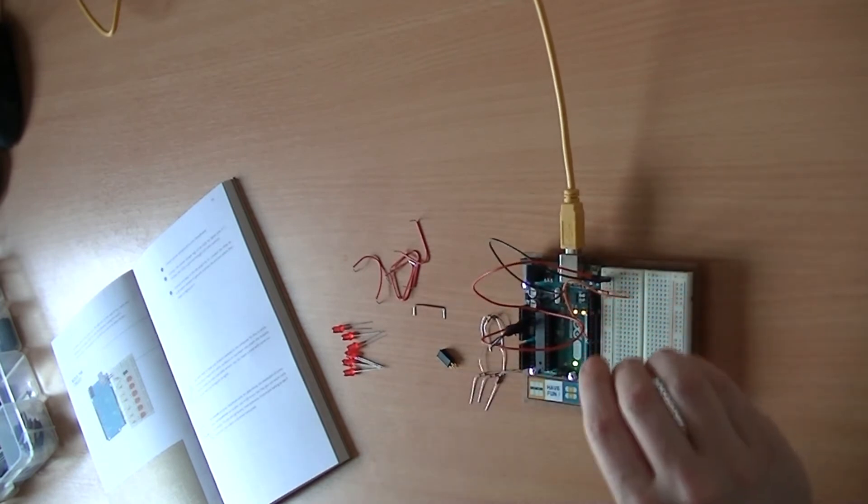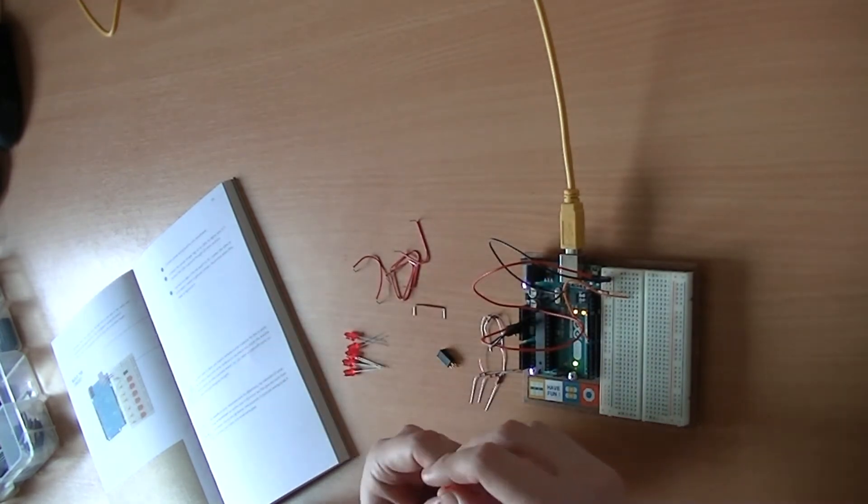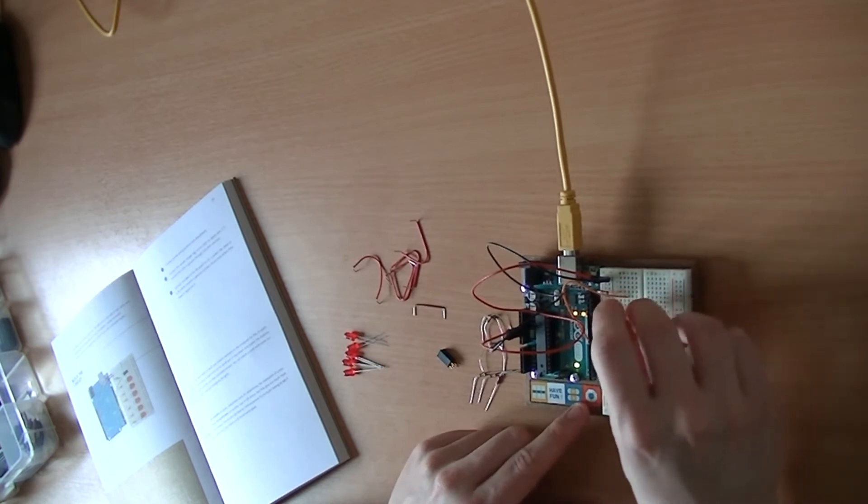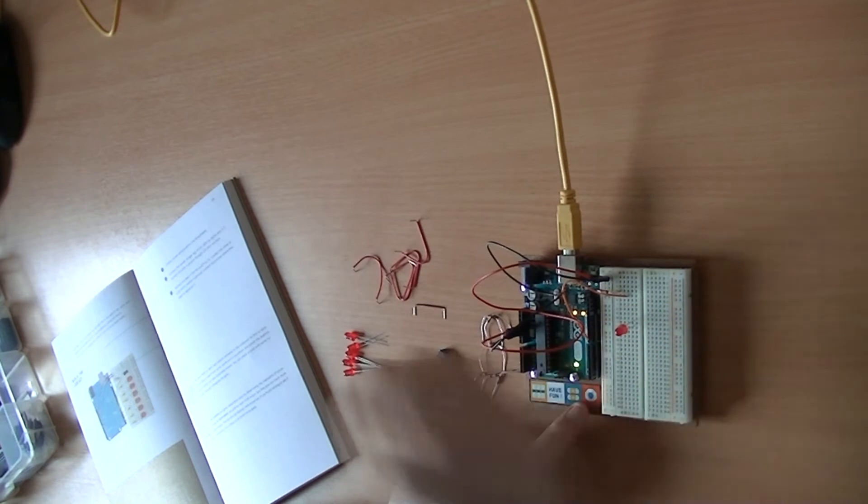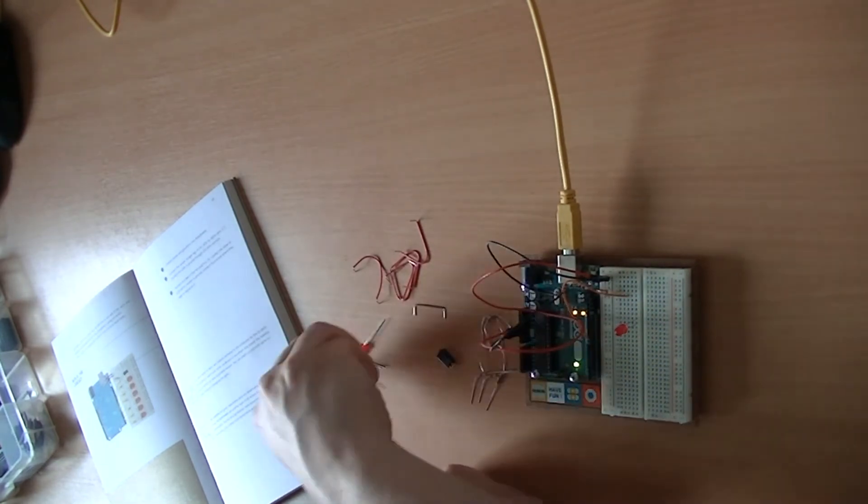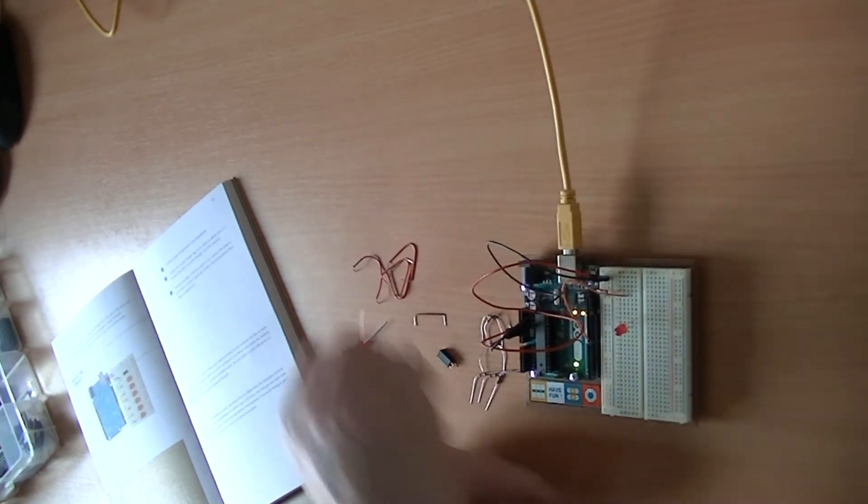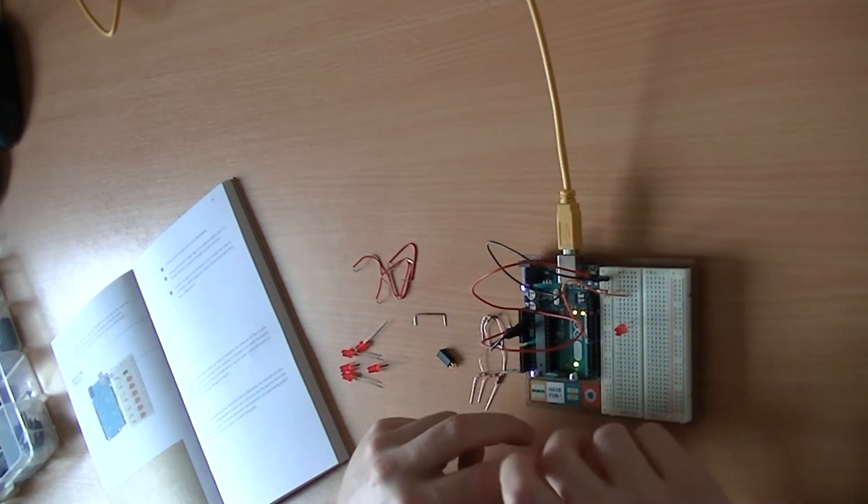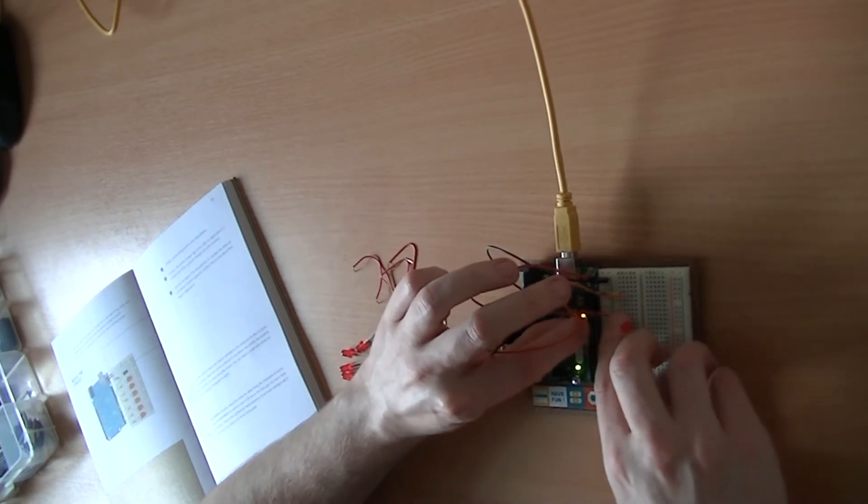Then we'll actually plug in the LEDs themselves. So we're going to connect the anodes, the longer legs, to digital pins 2 through 7 here. We'll start around here and go from row 10 to 11. I'll just plug all of the LEDs in, although that'll probably make it a lot more difficult for me. So let's start with the first LED and plug that into digital port 7 from the top.